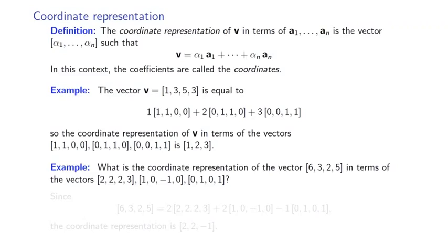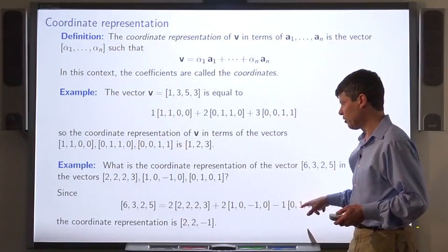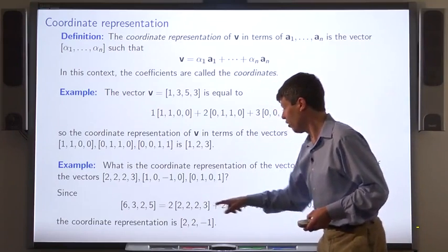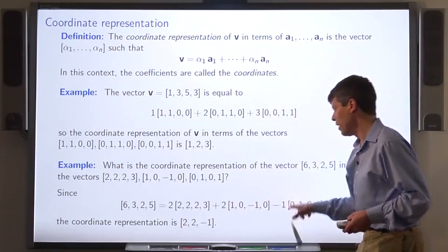What's the coordinate representation of this vector in terms of these vectors? Well, we can write this vector as this linear combination. So the coordinate representation is the vector consisting of the coefficients 2, 2, and minus 1.